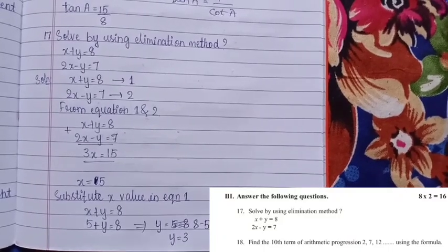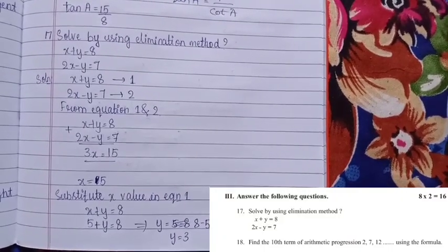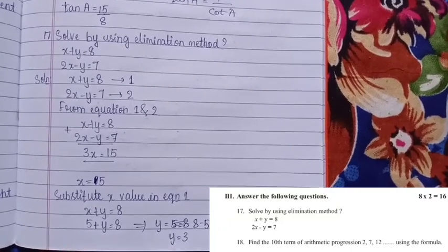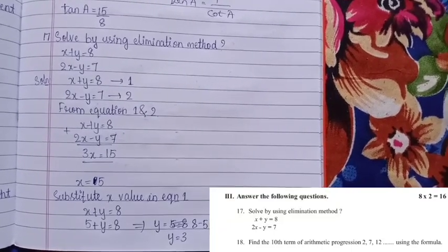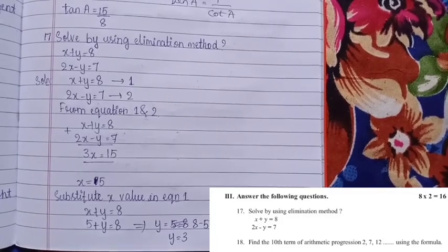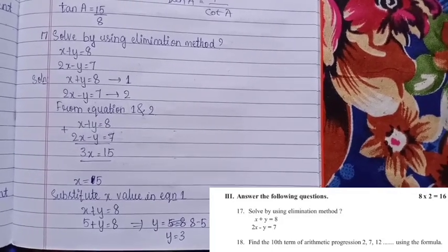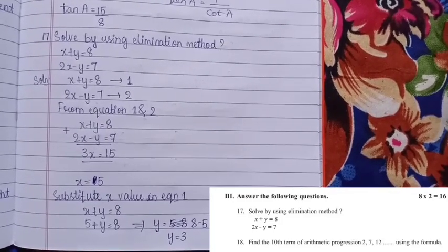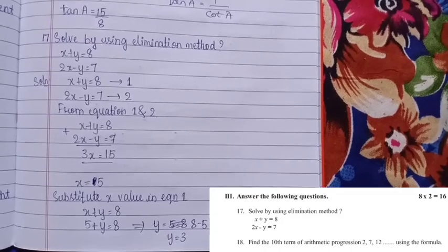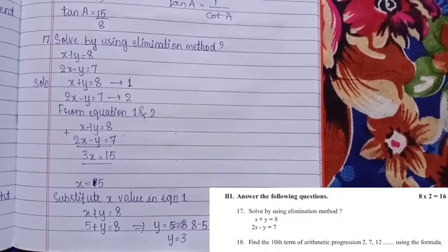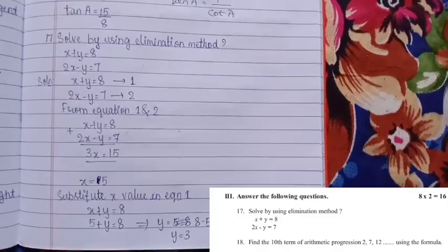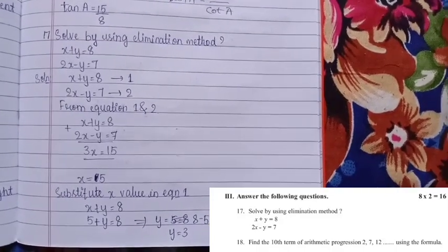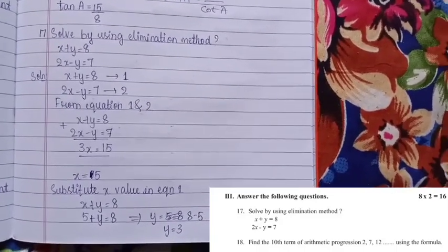Substitute x = 5 in equation 1: x + y = 8 gives 5 + y = 8, so y = 8 − 5 = 3. Therefore y = 3.